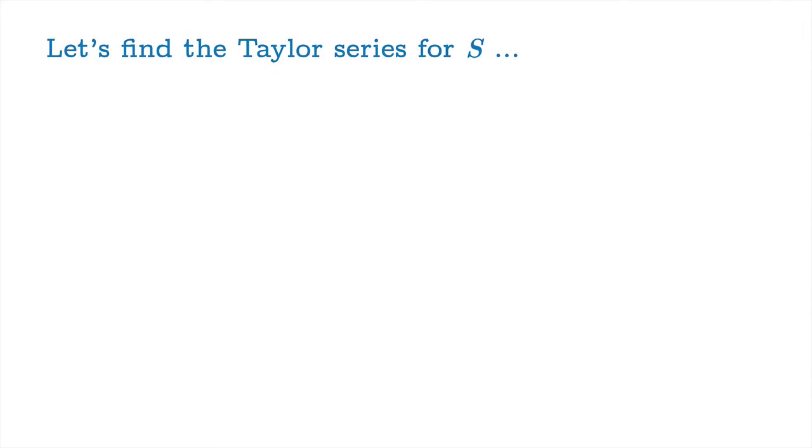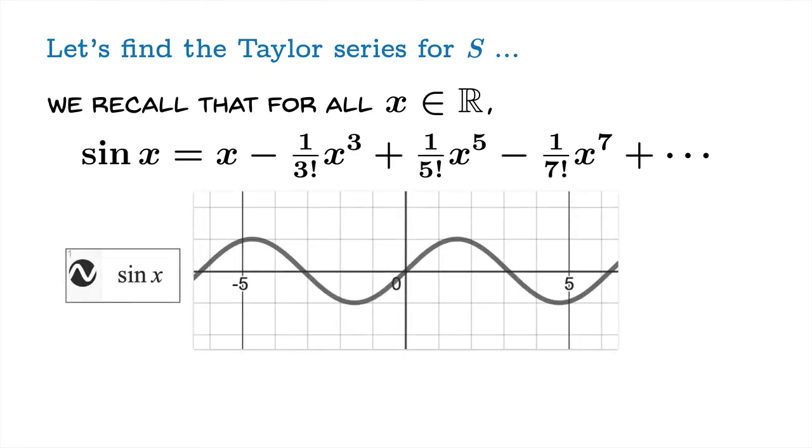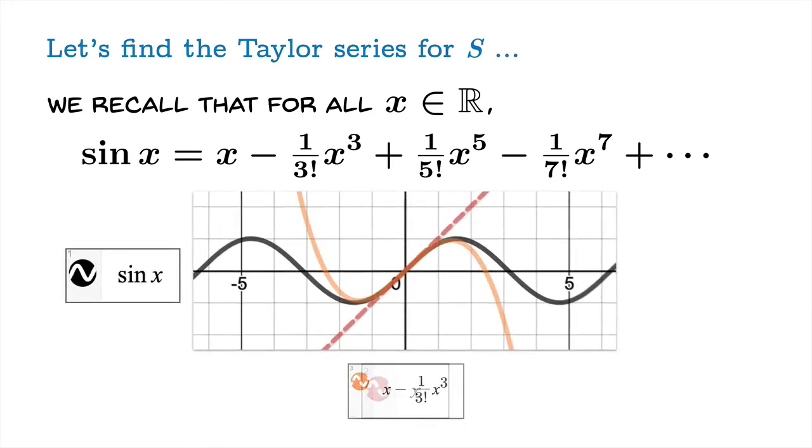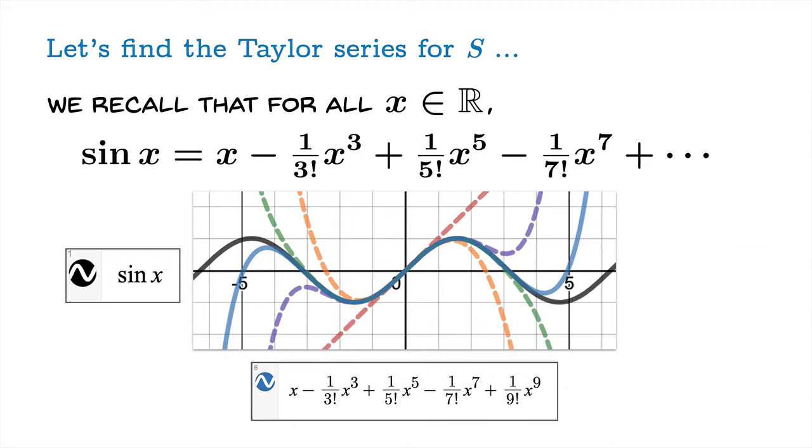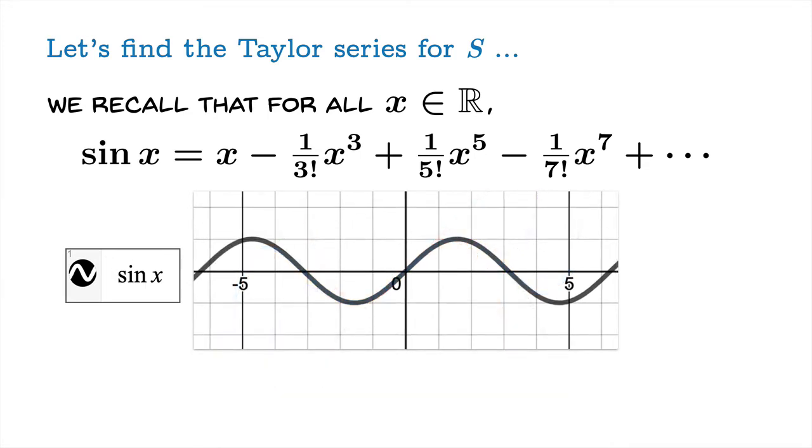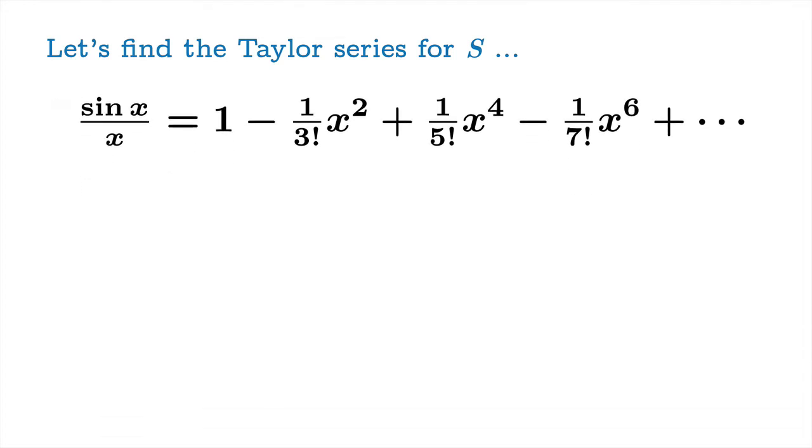So, let's find the Taylor series for s. Well, we don't really need to find the Taylor series for s directly. We already know that for all x, sine x is given by this Taylor series. This is something you should review if you have to, but the Taylor series for sine x is given by this formula. And we can, once again, go to Desmos and check the various Taylor polynomials. You can truncate this series and get these various polynomials. And you can see how for each x, if you're patient enough, the series will eventually converge to the value of sine x. So, here we have our Taylor series for sine x. And then what we're going to do is we're going to simply factor out an x, divide through both sides by x, and there we have a Taylor series for sine x over x.